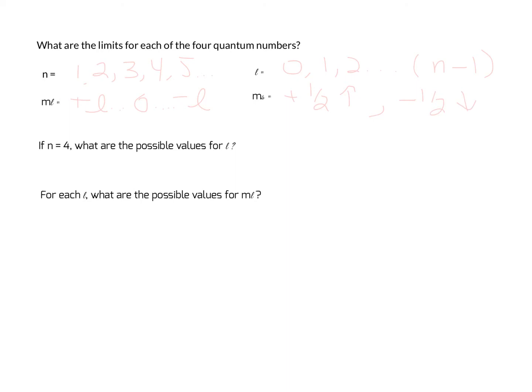Our next question is, if n equals 4, what are the possible values for l? Well, we know that l starts at 0 and can go all the way up to what n minus 1 is. So n minus 1 is 4 minus 1, or 3, so our possible values for l are 0, 1, 2, or 3.